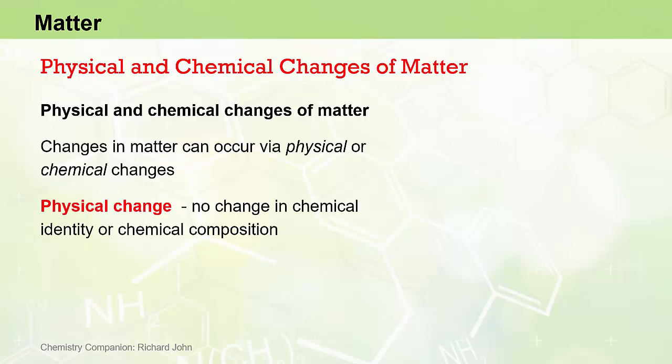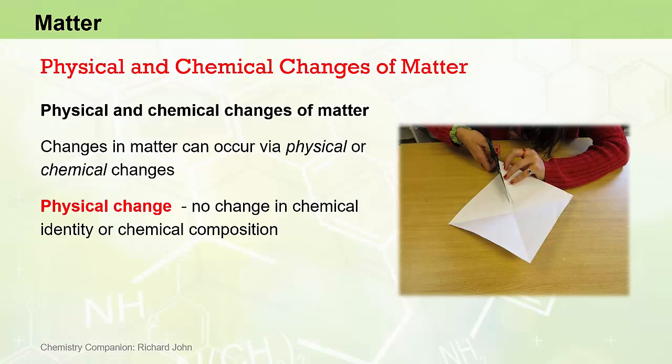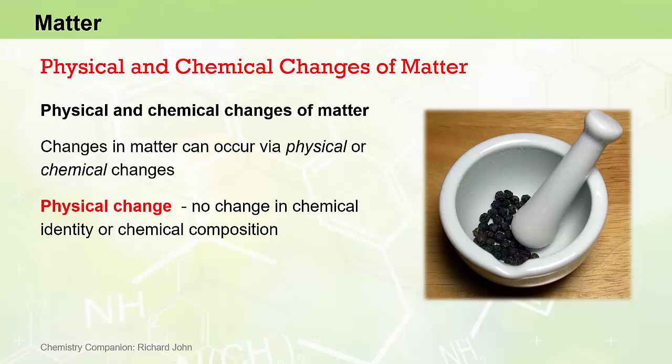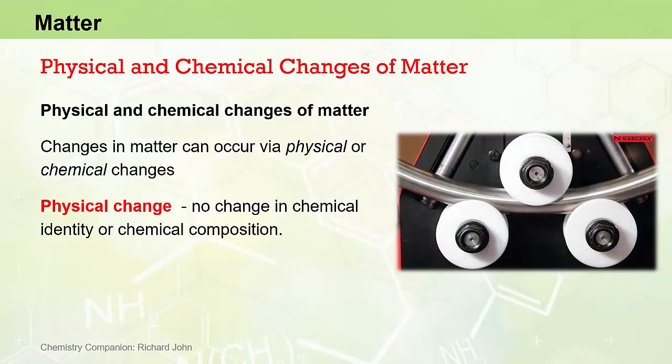A physical change in matter is a process where the form of matter may be changed without changing its chemical identity or composition. For example, the cutting of paper, grinding of peppercorns, or bending of an aluminum bar are examples of physical changes where, importantly, no new substances are formed. That's a key characteristic of physical transformations.